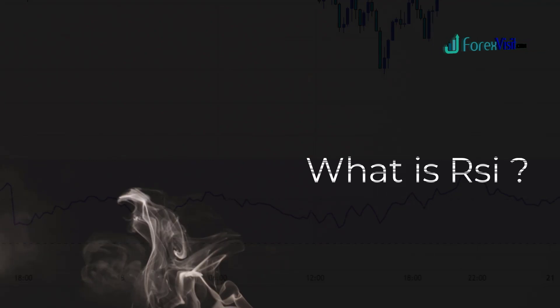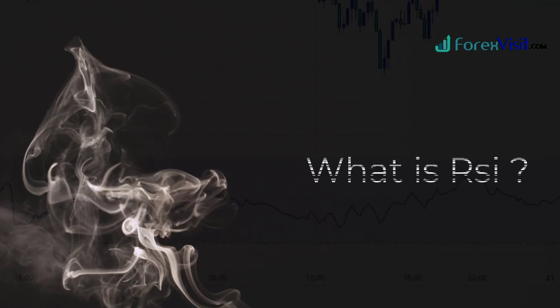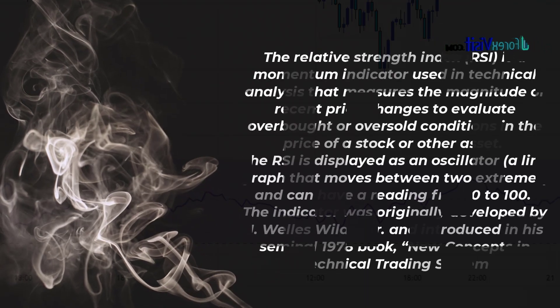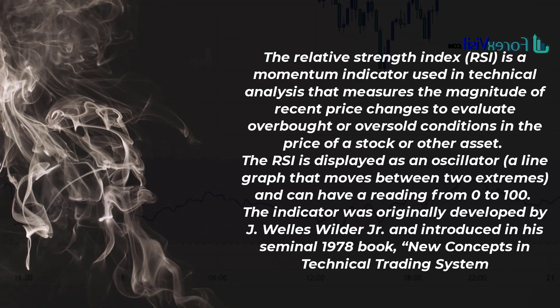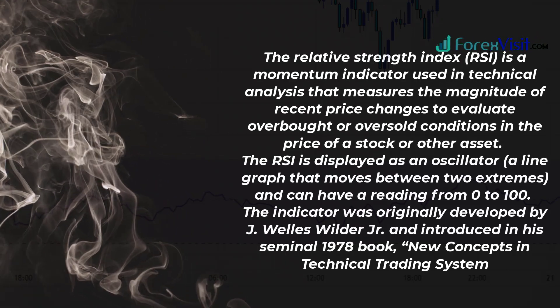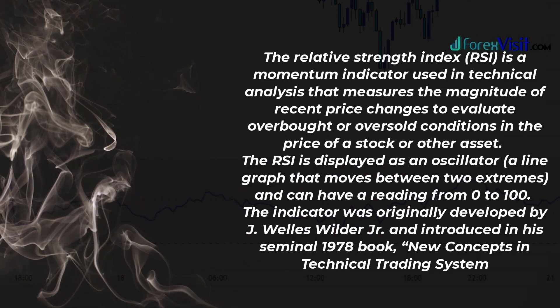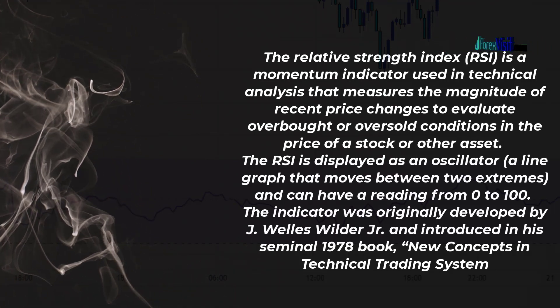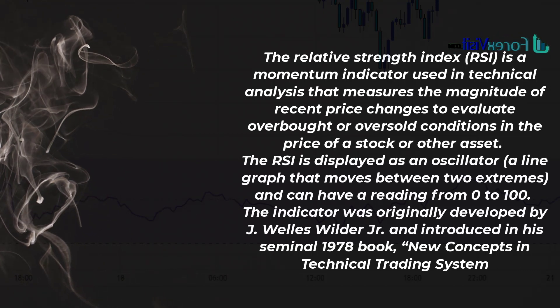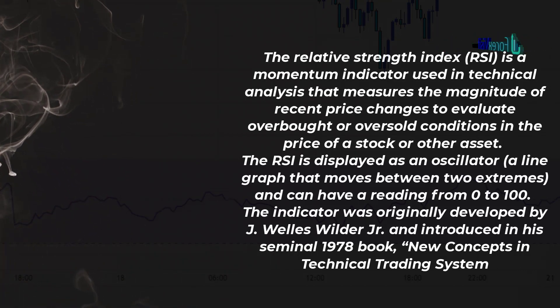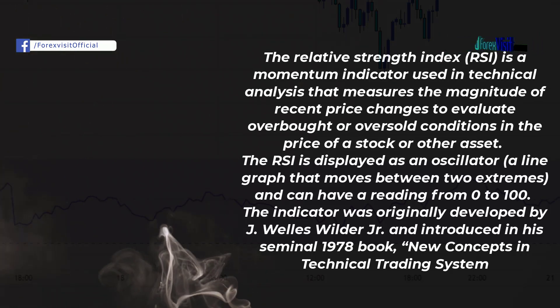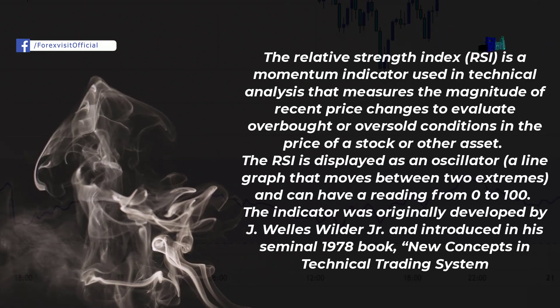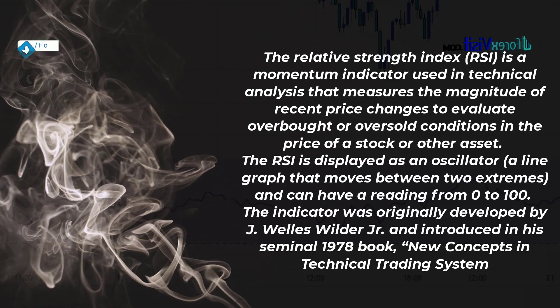The Relative Strength Index (RSI) is a momentum indicator used in technical analysis that measures the magnitude of recent price changes to evaluate overbought or oversold conditions in the price of a stock or other asset. The RSI is displayed as an oscillator — a line graph that moves between two extremes — with a reading from 0 to 100. The indicator was originally developed by J. Wells Wilder and introduced in his seminal 1978 book, 'New Concepts in Technical Trading Systems.'